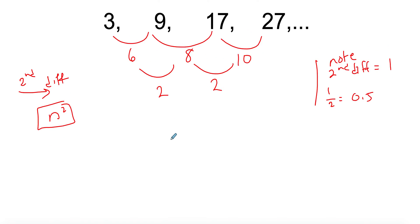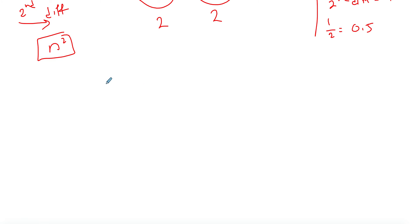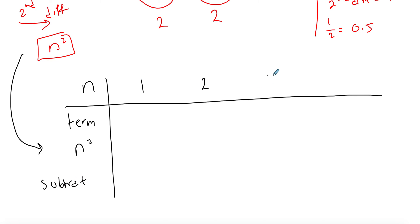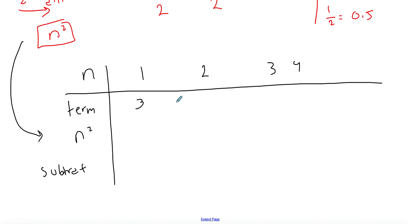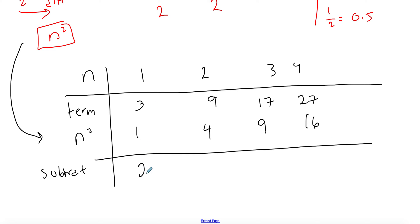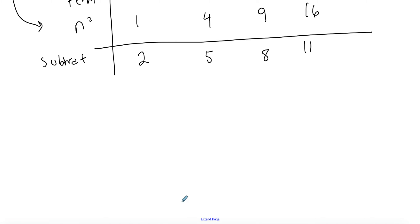Now create the table: n is 1, 2, 3, 4; the terms are 3, 9, 17, 27; n squared gives 1, 4, 9, 16. Then subtract: 3 minus 1 is 2, 9 minus 4 is 5, 17 minus 9 is 8, and 27 minus 16 is 11. Notice the subtraction row is not a constant term anymore.